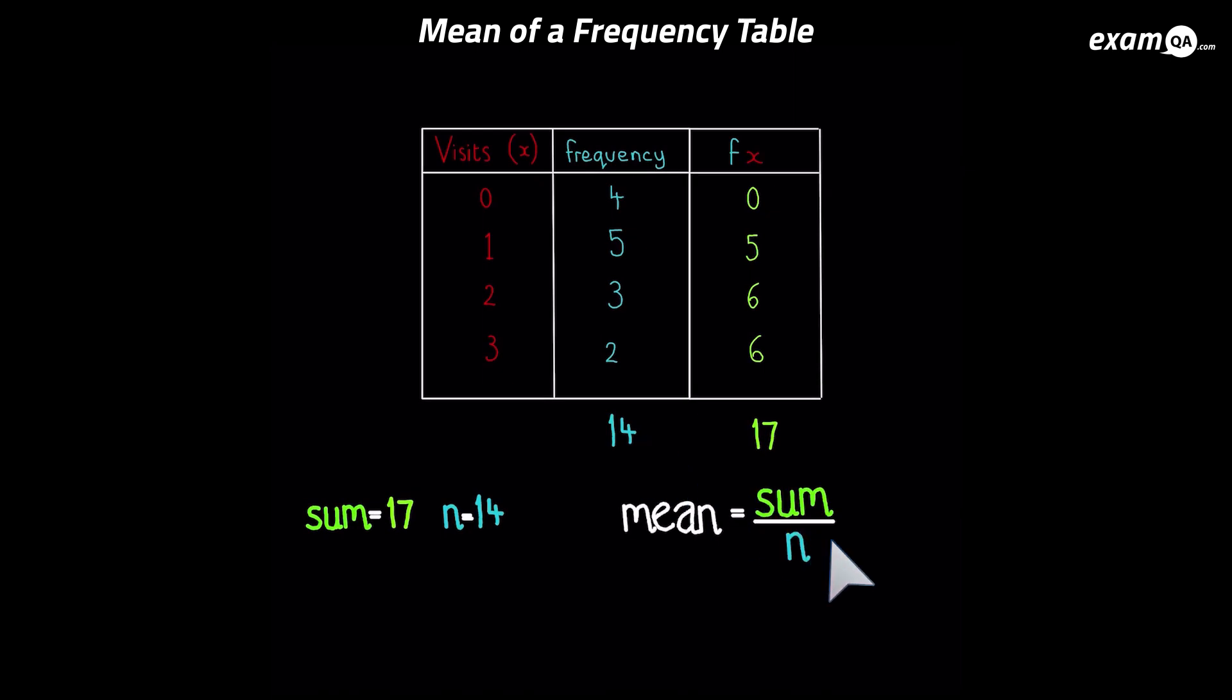Now we can fill in the formula. The mean is the sum divided by n. Remember, the sum is the total of the fx column. And that will be over n, which is the total of the frequency column. So our mean is 17 over 14. And that gives us 1.21 to two decimal places.